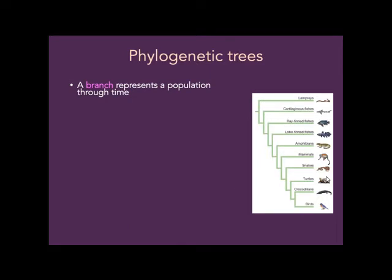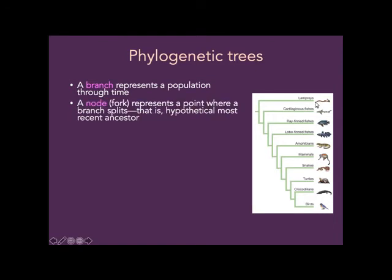More vocabulary. A branch represents a population through time. There's a lamprey branch and a cartilaginous fish branch. Time-wise, the stem at the bottom is a long time ago and the tips are the present. So the branch goes through time from a long time ago to the present.